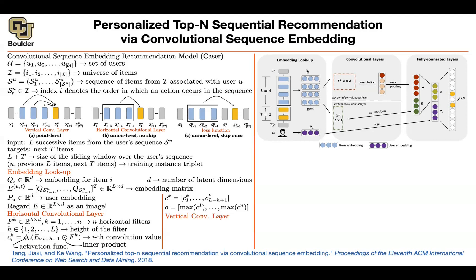If you interpret the other dimension as your pixel dimension and the first as the number of channels, you redefine your filter. In this case the filter size spans the entire number of channels and one position, so you shift by one and multiply — because the stride is one and filter size is one in that dimension, you end up with many vectors directly. This avoids pooling operations and directly gives you a vector. This is vertical convolution, which operates at the item level, while horizontal operates at the union level.